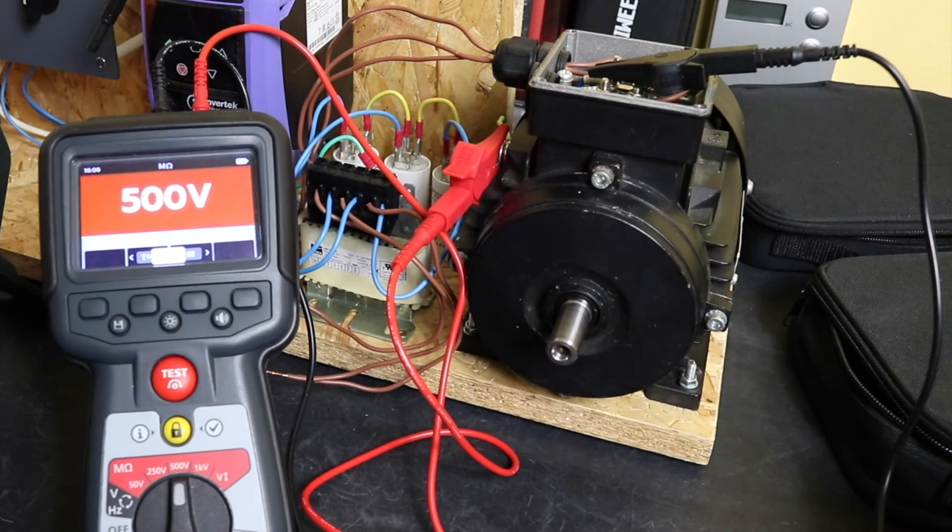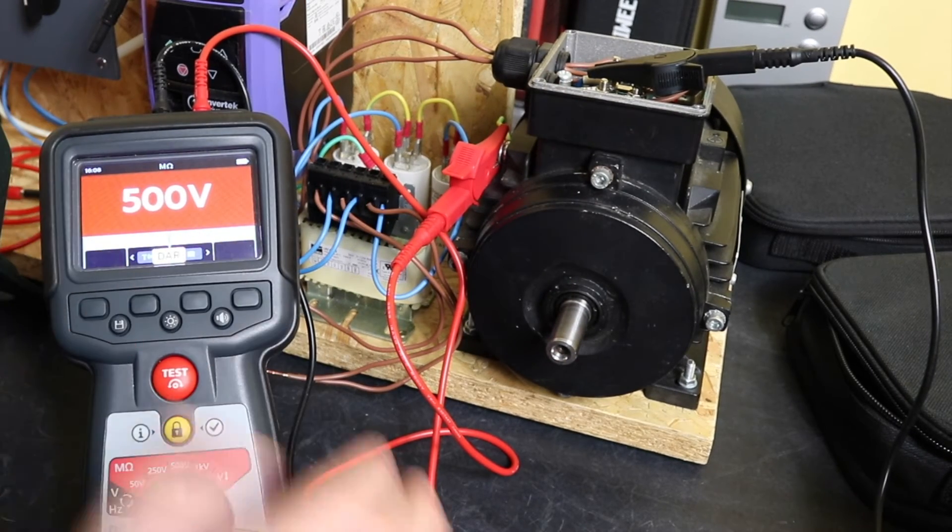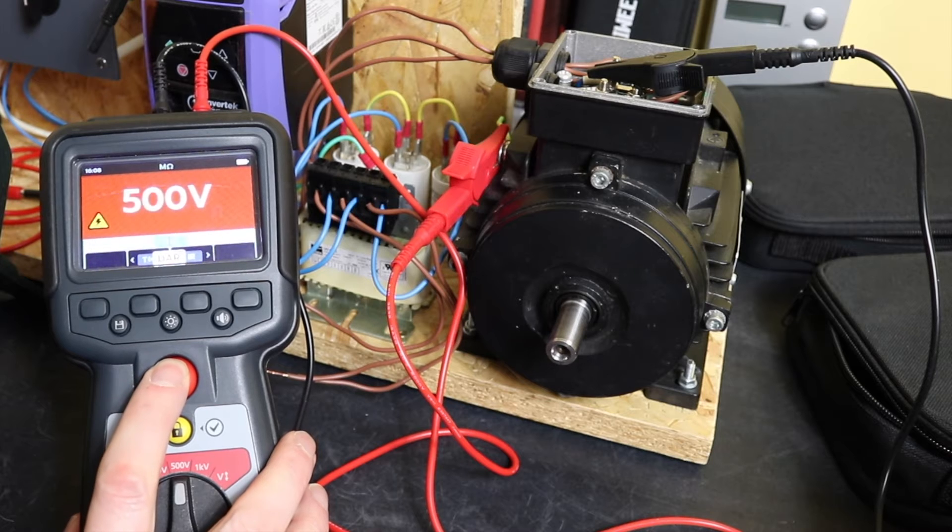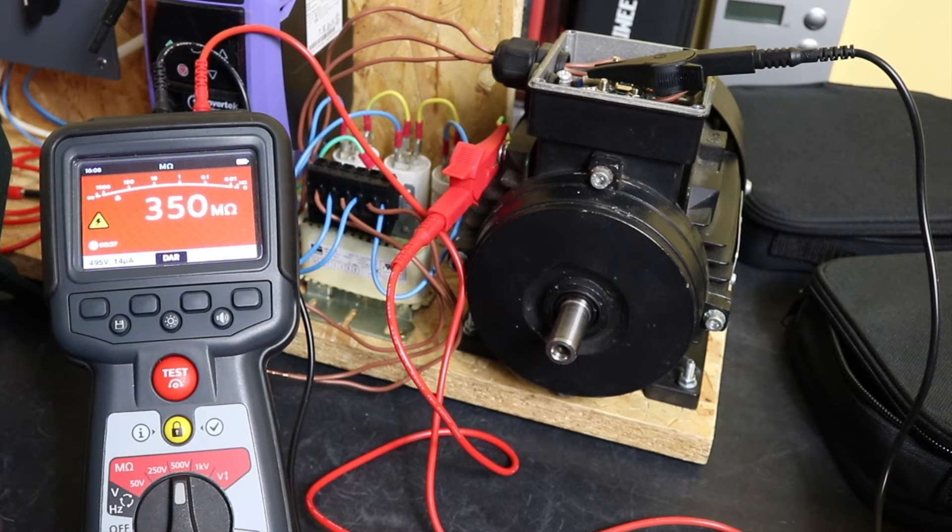We'll set up with our MTR105. We're on DAR again, 500 volts, and we'll go for it and see what reading we get from this one. We got 1.77 gigaohms on the UT505B.